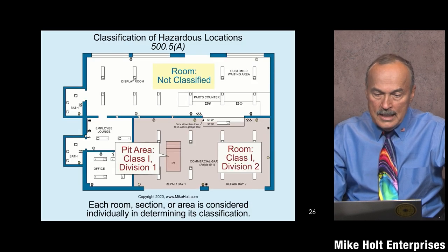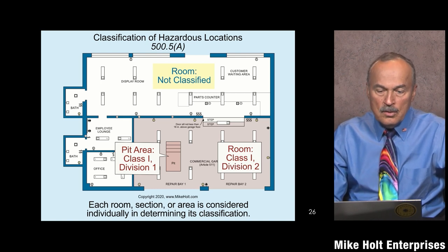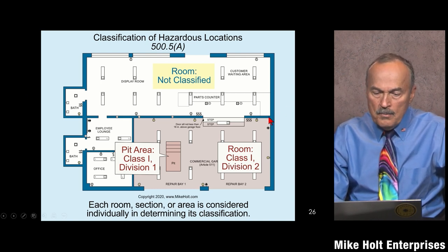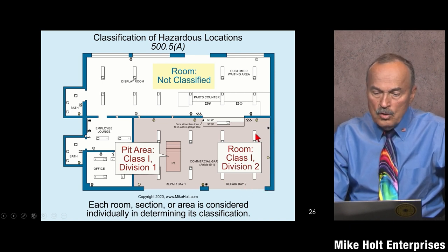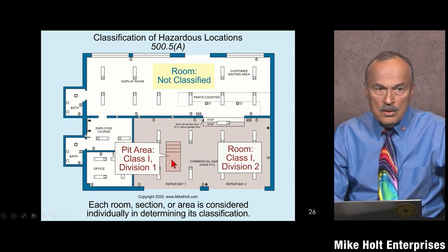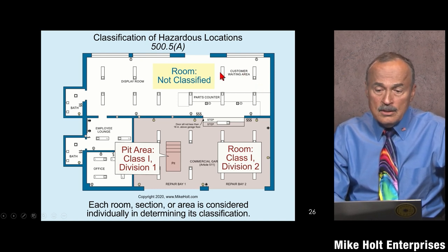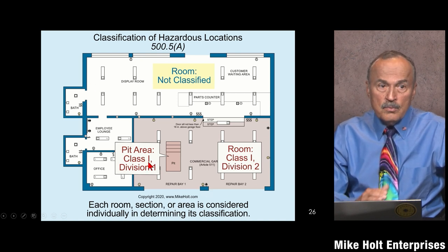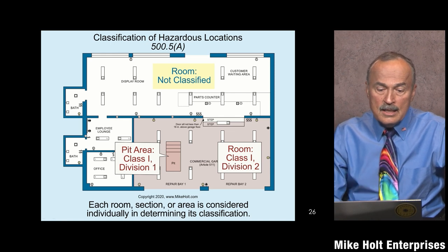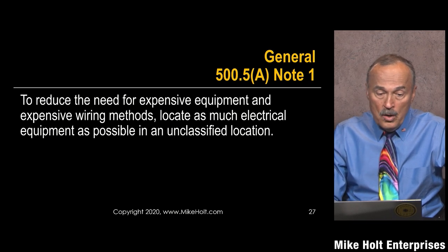Each room or area is considered individually in determining its classification. For example, somebody has determined that this area here is a Class 1 Division 2, and the pit is a Class 1 Division 1. All the other spots not classified are just Chapter 1 through 4 wiring, but once you're in a classified location you have to comply with Chapter 5 — specifically Article 501.